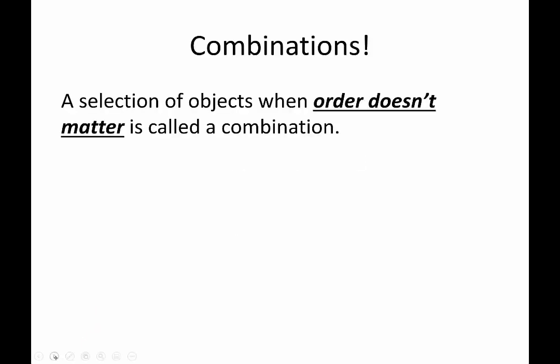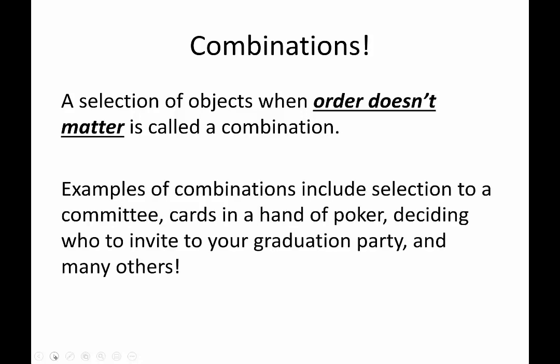A combination is a selection of objects when order doesn't matter. That's the big difference between a combination and a permutation — order doesn't matter for combinations, order does matter for permutations. Examples of combinations include a selection to a committee, cards in a poker hand, or who you invite to your graduation party, and many other possibilities.